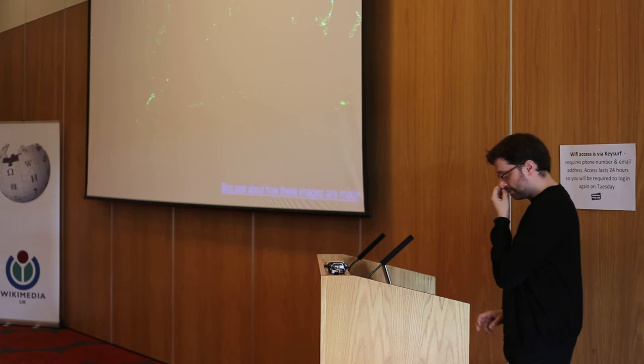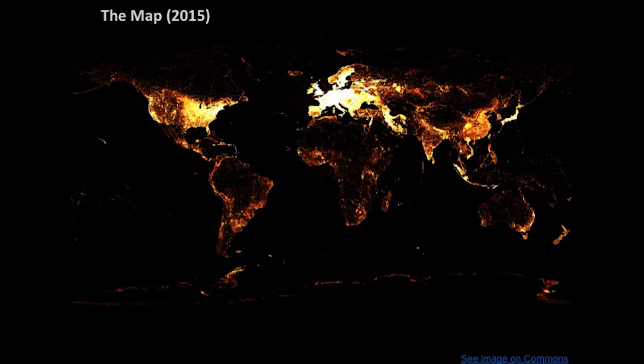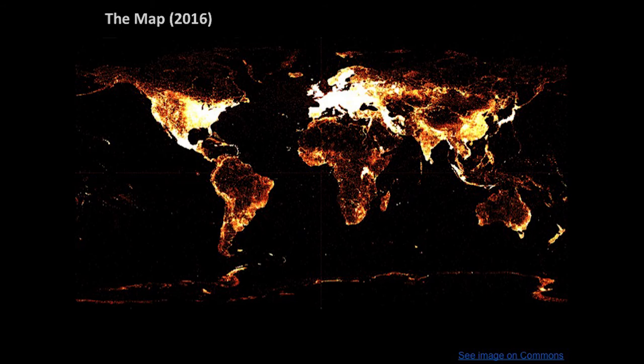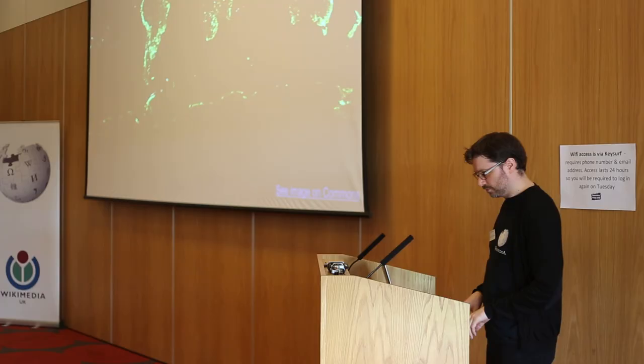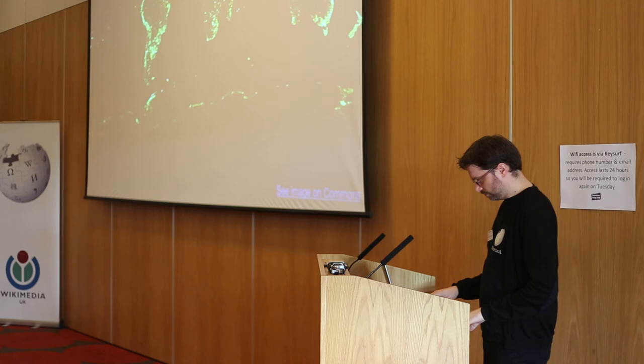If we think about the growth of Wikidata as lighting up the world with data — from 2014 to 2015 to 2016 — every single dot is one thing Wikidata knows is there, because it has a coordinate. You can see how it started with the USA and Europe and is growing out to the rest of the world, filling in the places that need more data.